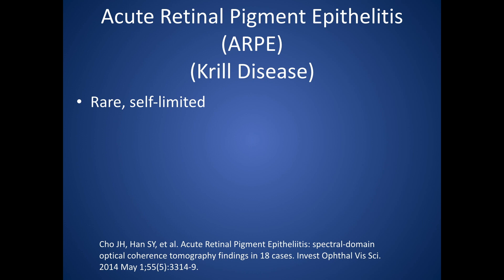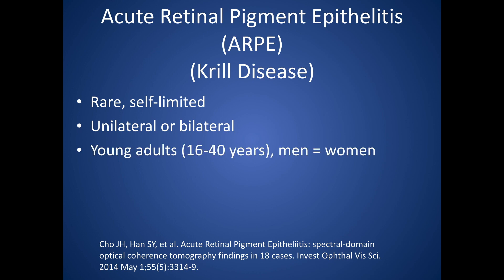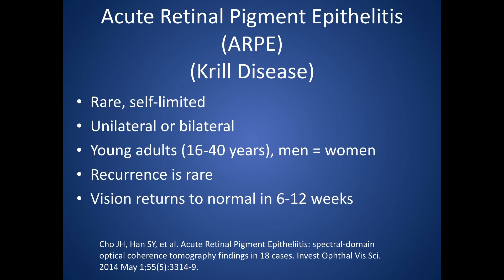Some background information about Kuhnt disease: it is a rare, self-limiting disease that can affect one or both eyes. Most patients are young to middle-aged adults and there is no sex predilection. Recurrence is rare, and usually most patients recover to near-normal acuity in about 6 to 12 weeks.